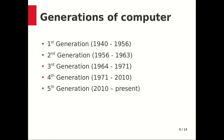All computers are classified in terms of generations. Every generation of computer is characterized by a major technological development that changed the way computers work, from the 1940s to the present day. The major developments made computers smaller in size, cheaper, and more efficient, which we will discuss one by one in the next slides.